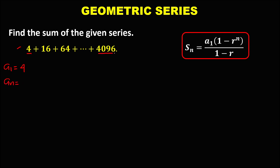The last term, that's a sub n, that's 4,096. For n, the number of terms, since we don't know the number of terms for this series, n is the unknown. And r, the common ratio — we can find r using a sub 2 over a sub 1. Then a sub 2 is 16, the second term over the first term, therefore r equals positive 4.